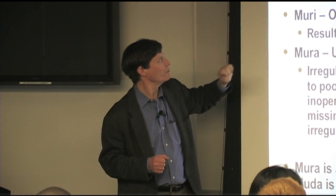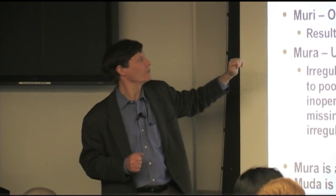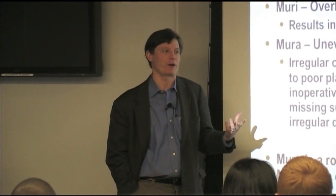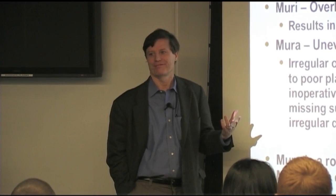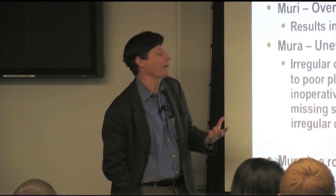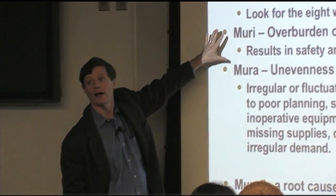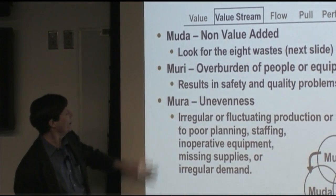There are some Japanese words associated with these that don't have good translations. Muri — overburden or unreasonableness. Essentially, if there's somebody in the process that too much is being asked of, telling them to work harder doesn't do very much good. This can be people or machines — if we've got to run a machine 24/7, how long is it going to work? It's going to work until the machine breaks. Being unreasonable, overburdening things tends to spawn muda waste.